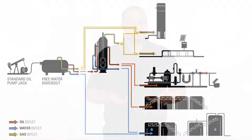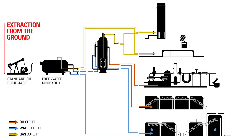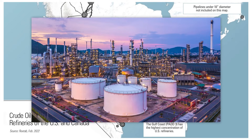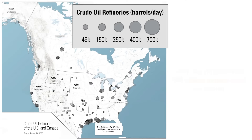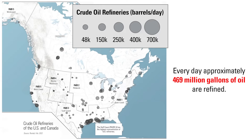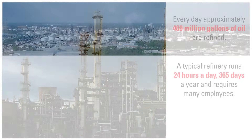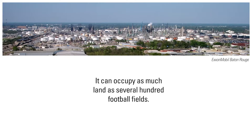So how is gasoline produced? When upstream producers extract oil from the ground, they run it through some initial separation at the well site. Then midstream companies pipe it downstream to large, multifaceted plants called oil refineries for further processing and separation. Every day, approximately 469 million gallons of oil are refined. A typical refinery runs 24 hours a day, 365 days a year, requires many employees, and can occupy as much land as several hundred football fields.